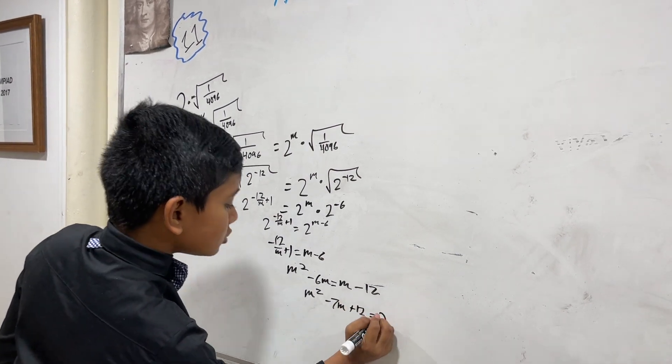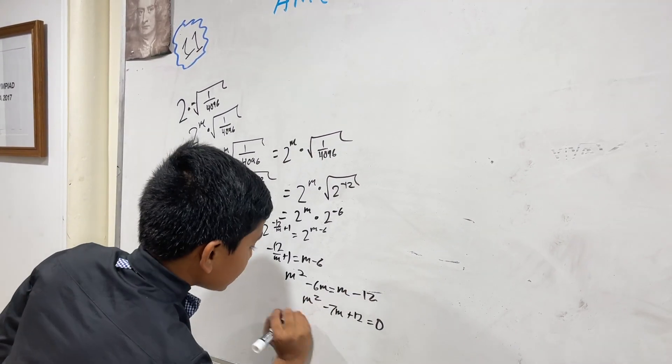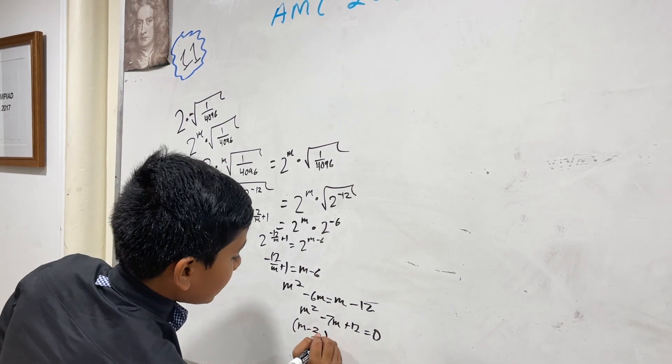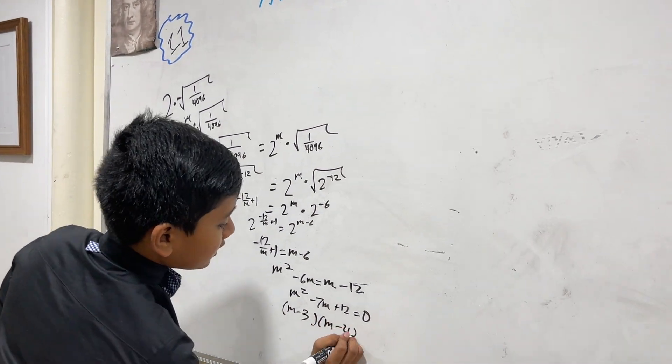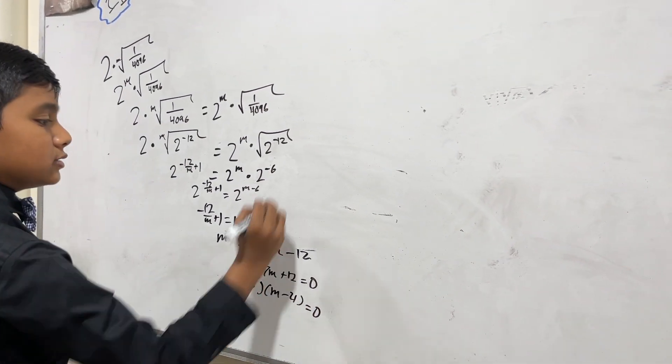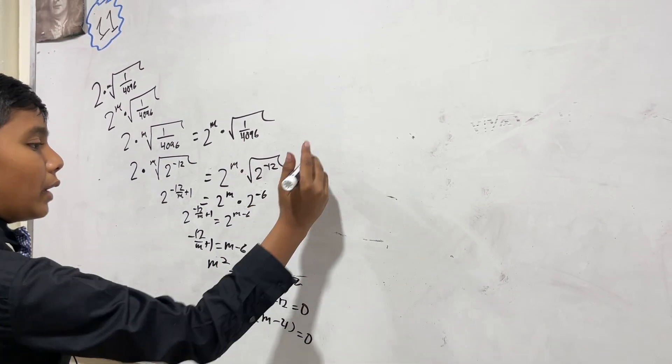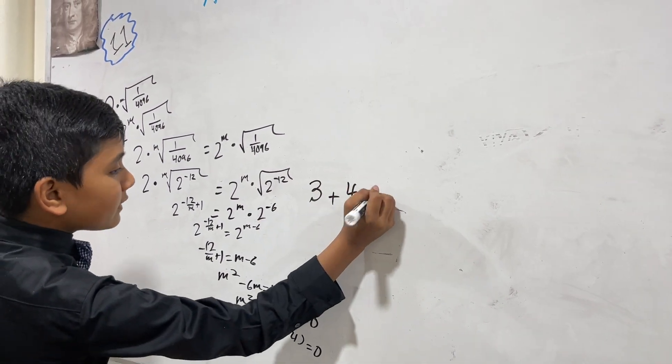But long story short, this is m minus 3 times m minus 4 equals 0. m minus 3 equals 0 gives m equals 3, m minus 4 equals 0 gives m equals 4. 3 plus 4 is 7.